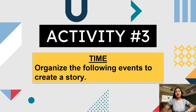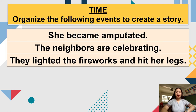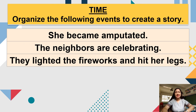Let us now proceed to the third and last activity, which is about time. This time, you have to organize the following events to create a story. Here are the events: she became amputated; the neighbors are celebrating; they lighted the fireworks and hit her legs. I will give you time to answer this activity.